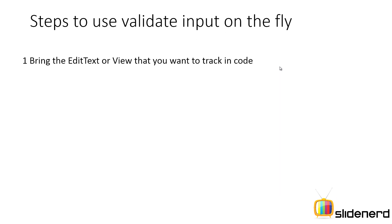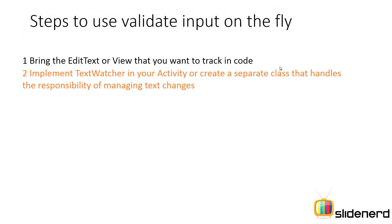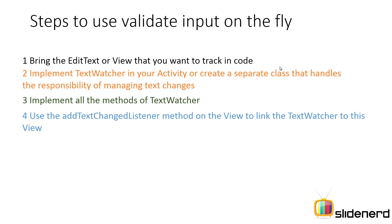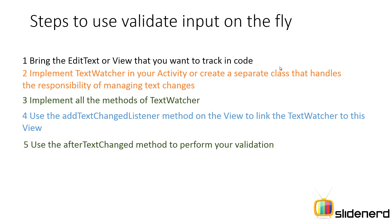Here is what you should do. First, bring the EditText that you want to track or monitor inside your Java code. Then implement TextWatcher either inside your activity, as an inner class, or as a separate class. Then implement all the methods inside TextWatcher — these are the methods you are going to override to take certain action when the EditText changes its content. The fourth step is to link the EditText and the TextWatcher using addTextChangedListener. And last but not the least, use the afterTextChanged method to perform your validation.